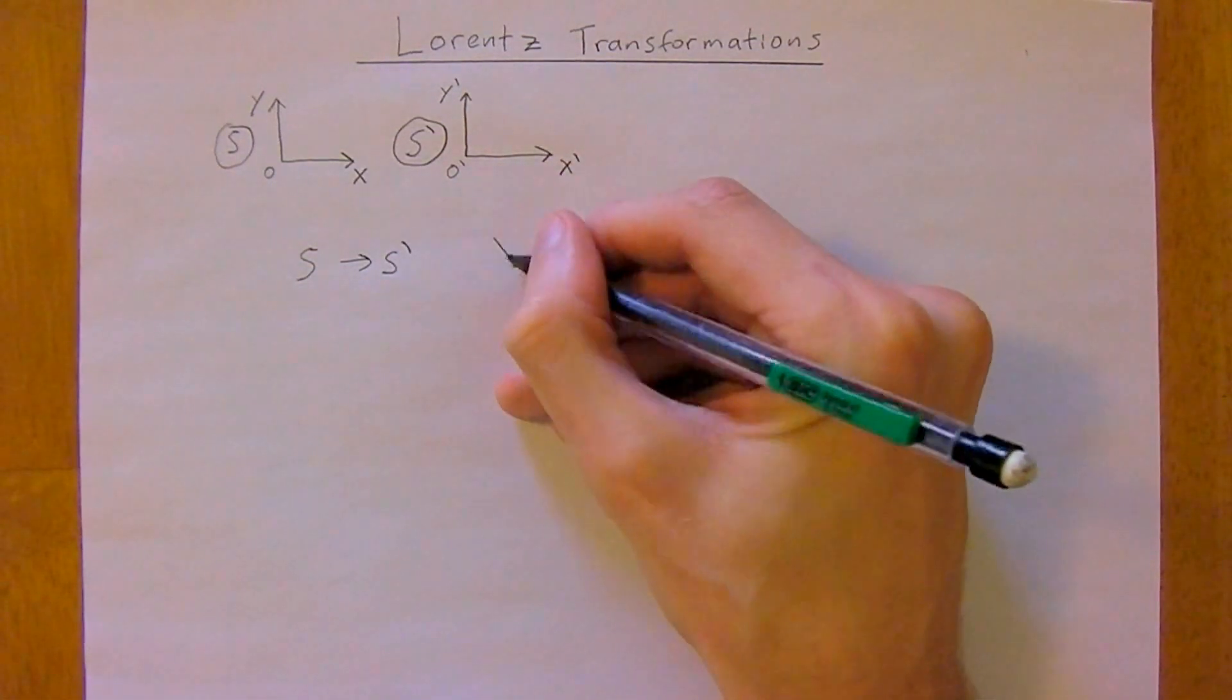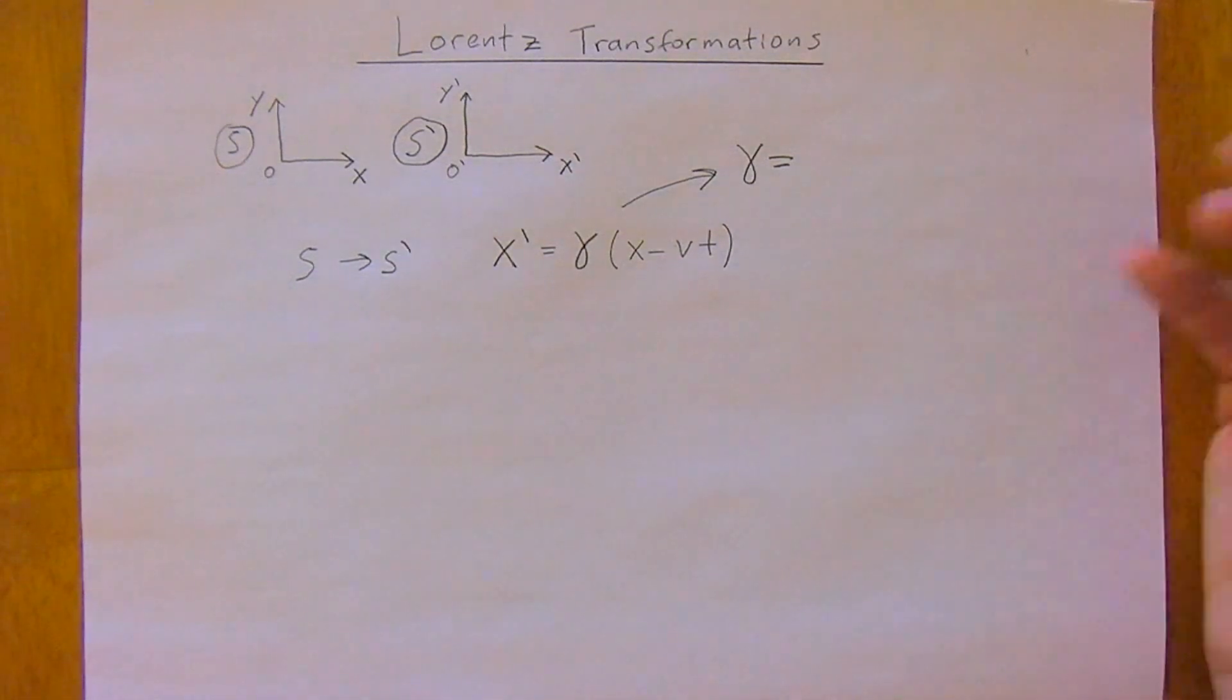If we want to move from the S to the S not frame, then we would use the following set of equations. X not is equal to little gamma times X minus V T. And recall that gamma just comes up so often in special relativity that we give it a special symbol: one over the square root of one minus V squared over C squared.